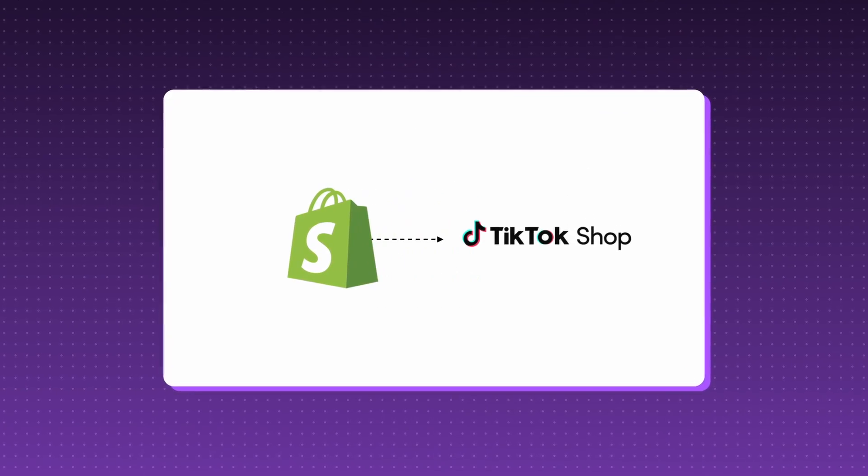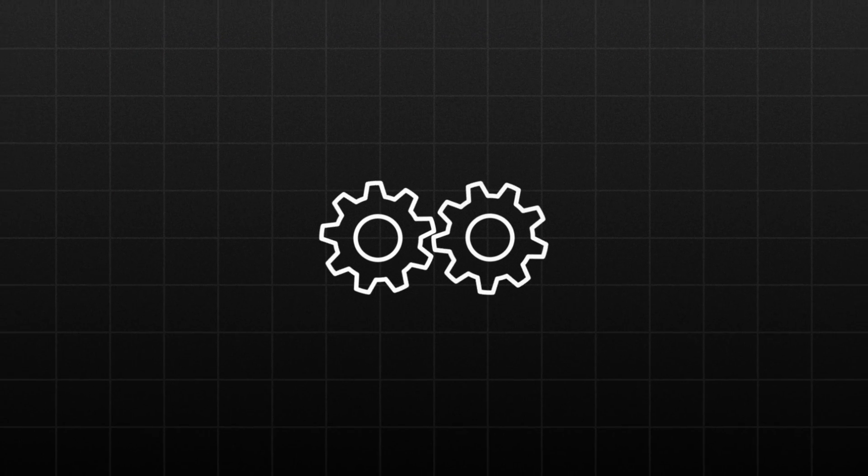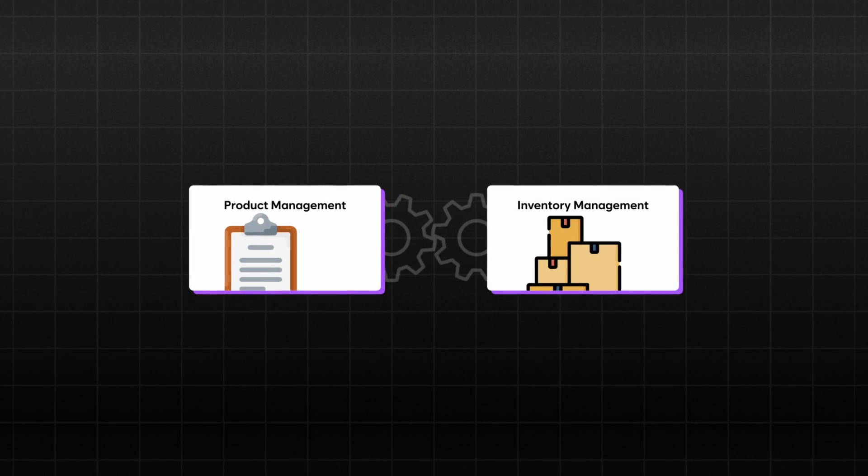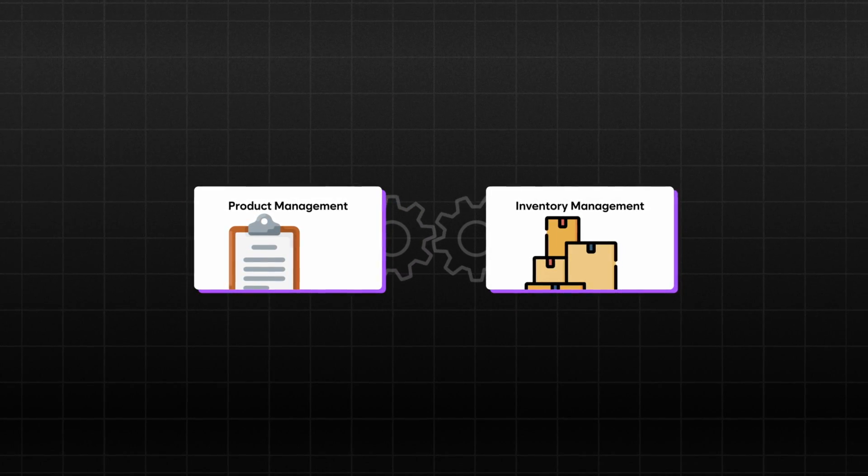So what's OwnBase? It's a brand new app that bridges the gap between your Shopify store and your TikTok shop, automating the tedious process of product and inventory management between the two platforms. With OwnBase, you can manage your TikTok shop products and inventory seamlessly, ensuring that both platforms are always in sync so you don't have to worry about products going out of stock or prices changing frequently.